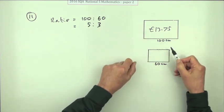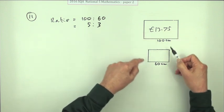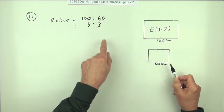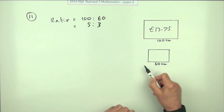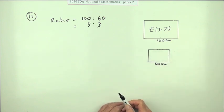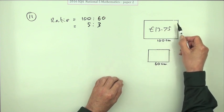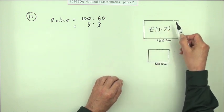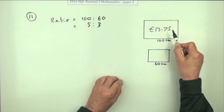So what that says is the small shape is three-fifths of the larger one and the large shape is five-thirds of the smaller one, as far as the linear lengths are concerned. If that £13.75 was the cost for the perimeter, if that was the cost of framing, then the cost of framing this one would be in that ratio.